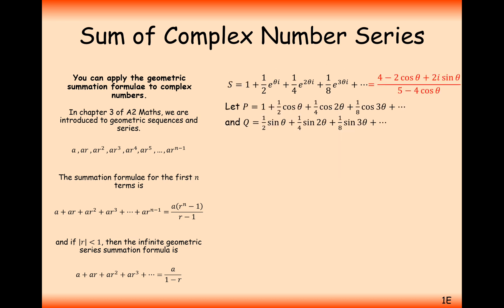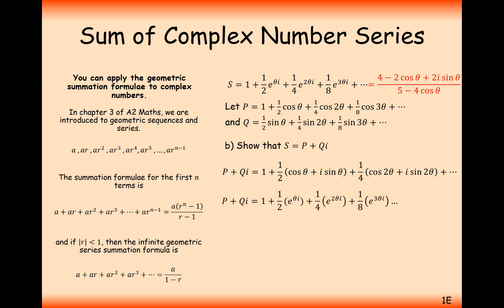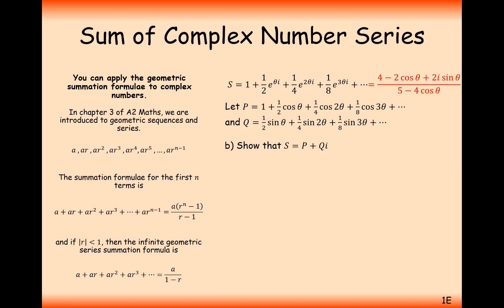Moving on to part B of a typical question like this — the answer is stored in red. We let P equal one summation and Q equal another, and part B is to show that S equals P plus Qi. Writing out P plus Qi in strategic order: 1 goes at the front, then we factorise out one-half from two terms, then one-quarter from the next two, and so on. Rewriting in exponential form, we get exactly the same expression as S.